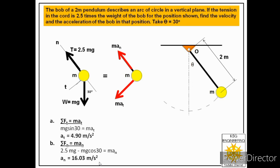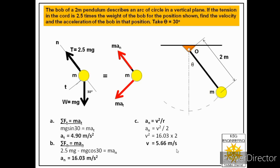We have now found the acceleration of the bob along the tangent and along the normal. Next, to find the velocity of the bob, we use the formula for normal acceleration: an equals v²/r. Since r equals 2 meters and an equals 16.03 m/s², substituting gives v equals 5.66 m/s. So we have found both the acceleration and velocity of the bob for the position shown. I hope this answer is clear to you, thank you very much.